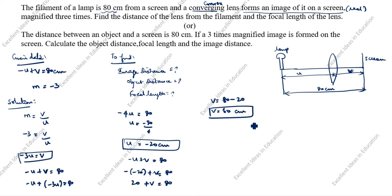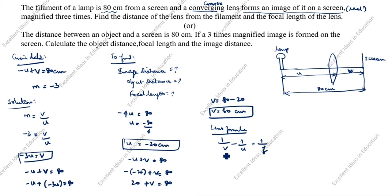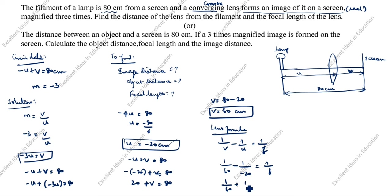Now we will find the focal length f. The lens formula is 1 by V minus 1 by U equals 1 by f. Substituting: 1 by 60 minus 1 by (minus 20) equals 1 by f. The double negative gives a plus, so 1 by 60 plus 1 by 20 equals 1 by f.